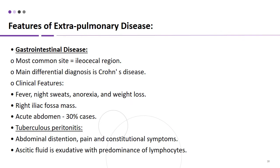In the gastrointestinal tract, the most common site of tuberculosis is the ileocecal region, and the main differential diagnoses are Crohn's disease and typhoid fever, both of which cause lymphoid enlargement. Clinical features include the same B symptoms — fever, anorexia, night sweats, and weight loss. A right iliac fossa mass can be felt on examination. Acute abdomen occurs in 30% of cases. Tuberculous peritonitis is characterized by abdominal distention, pain, and constitutional symptoms, with exudative ascites predominated by lymphocytes.